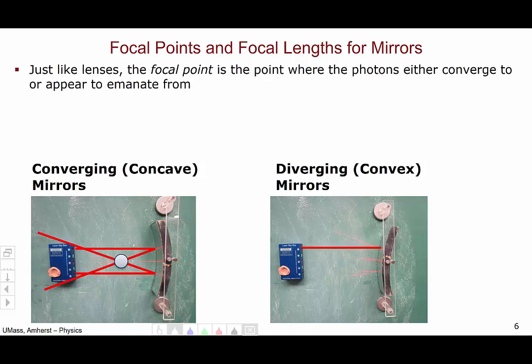For the diverging mirror, the light comes in and bounces off, and the light appears to emanate from some point behind the mirror. So, this would be the focal point for this diverging mirror.